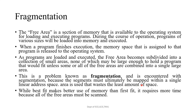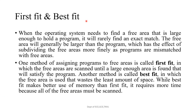When the operating system needs to find a free area large enough to hold a program, it will rarely find an exact match. The free area will generally be larger than the program, which has the effect of subdividing the free areas more finely as programs are mismatched with free areas. One method of assigning programs to free areas is called first fit, in which the free areas are scanned until a large enough area is found to satisfy the program. Another method is called best fit, in which the free area used is the one that wastes the least amount of space. While best fit makes better use of memory than first fit, it requires more time because all of the free areas must be scanned.